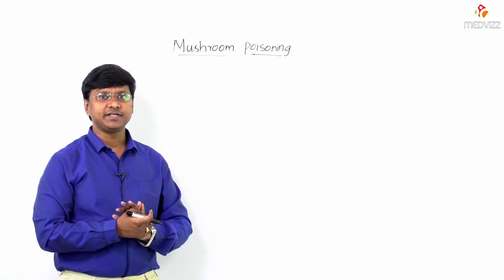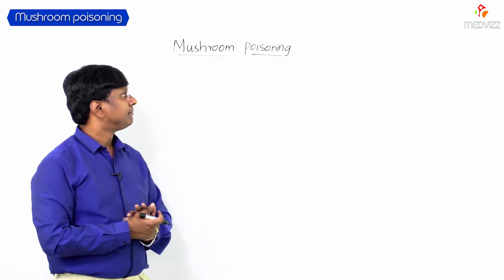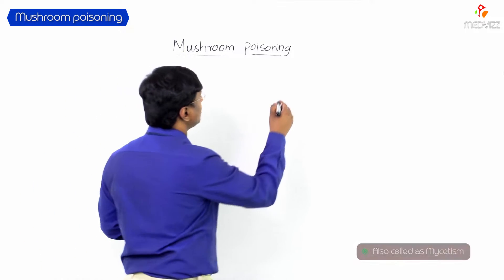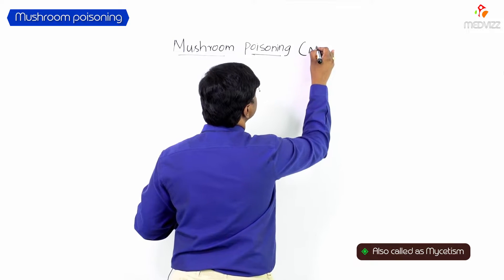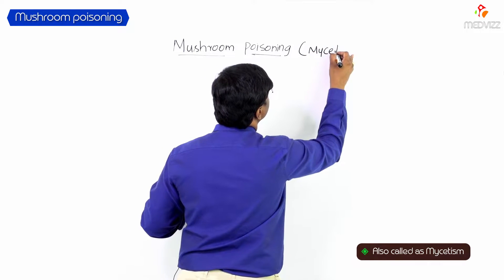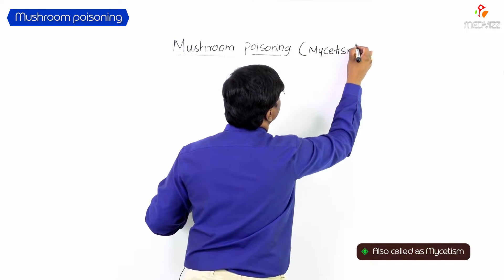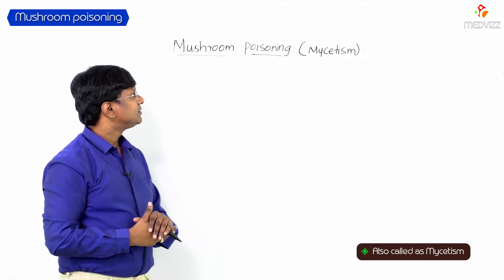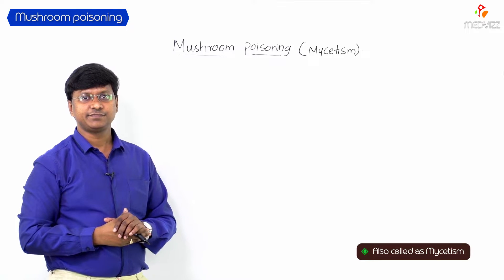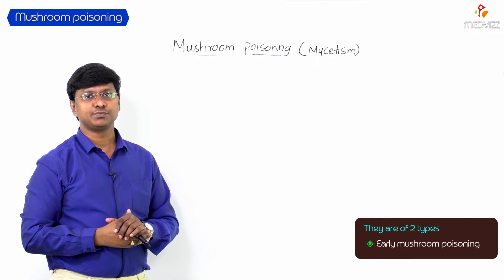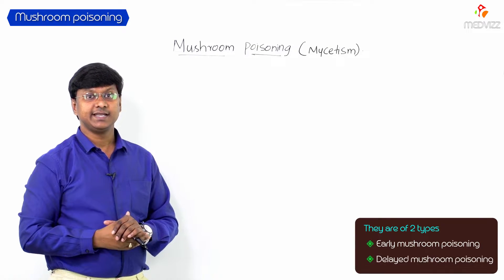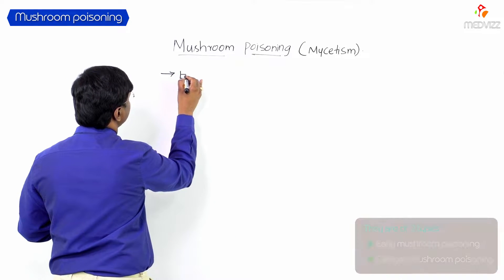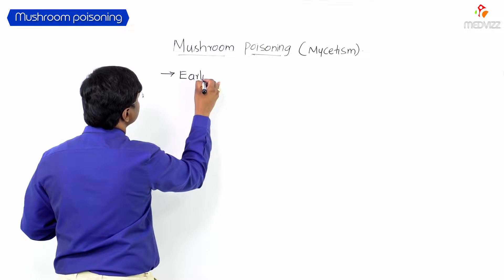Let me discuss mushroom poisoning, also called mycetism. We have two types: early mushroom poisoning and late mushroom poisoning. Let me explain the differences between them, starting with early mushroom poisoning.